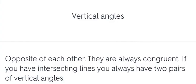Vertical angles. Opposite of each other. They are always congruent. If you have intersecting lines, you always have two pairs of vertical angles.